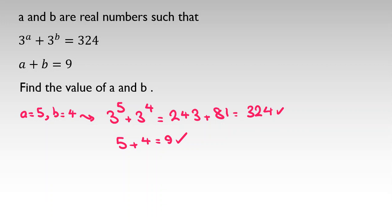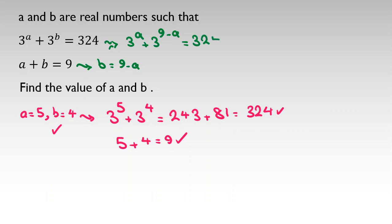We know a=5 and b=4 works. Now let's solve this properly. We have two equations and two variables. One useful idea is to use substitution. From the second equation, b equals 9 minus a. If we substitute, the first equation becomes 3 to the a plus 3 to the (9 minus a) equals 324.